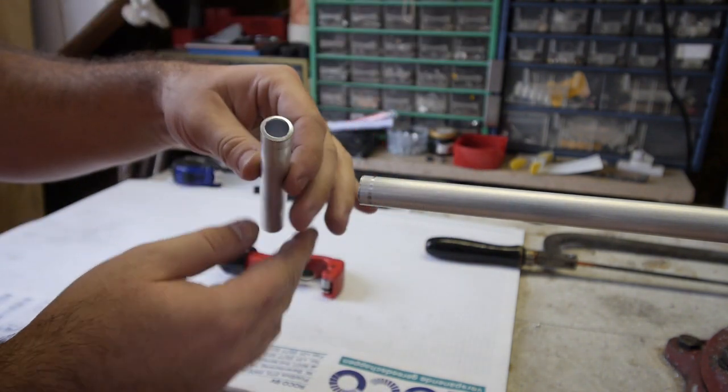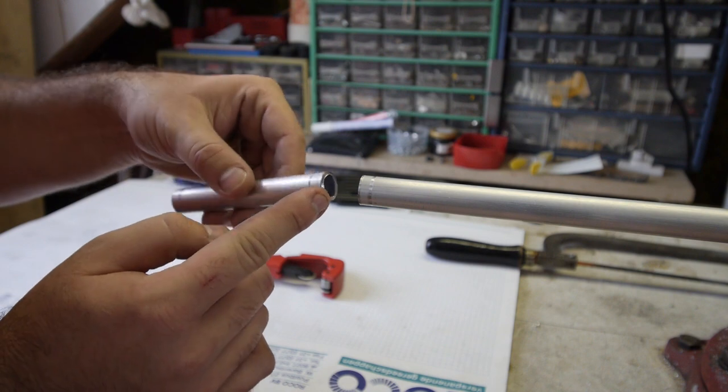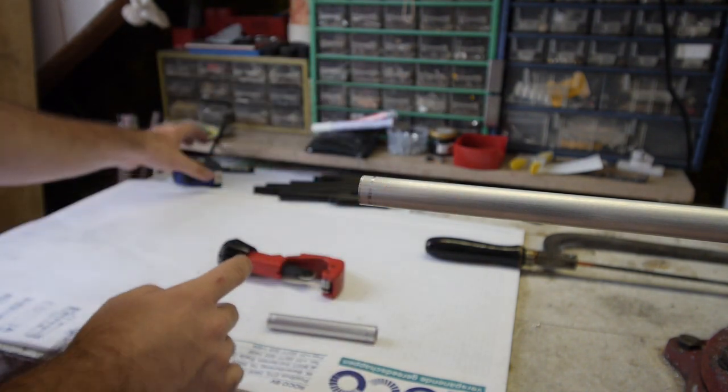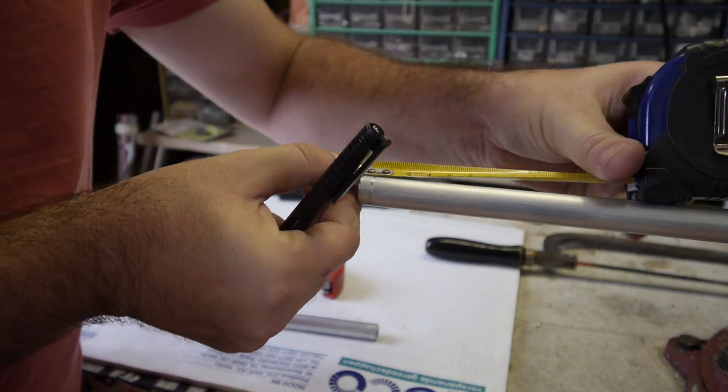And as you can see we have a very nice straight and clean cut. So let's make another one of 10cm so we have a set of them.